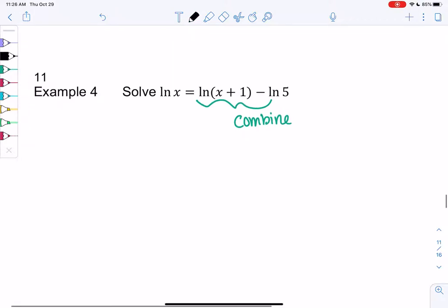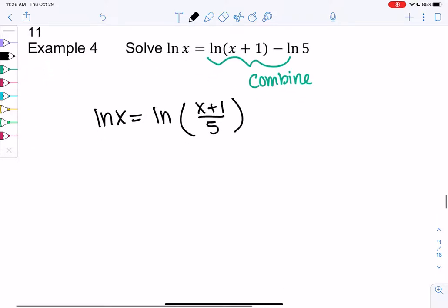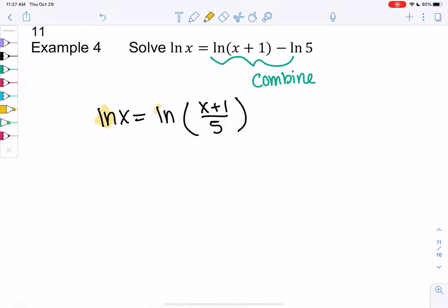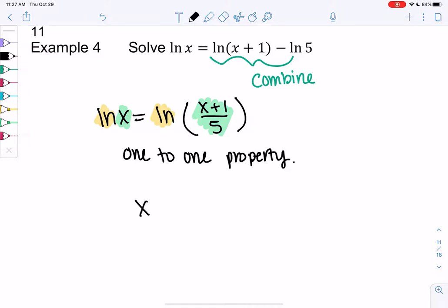So we have ln of x, we're going to leave the left side alone. On the right side, we'll use the property since it's subtraction. It becomes ln of x plus 1 divided by 5 when I combine them. And now we can use that 1-to-1 property because I have a single ln on both sides. The 1-to-1 property tells me the inner functions equal each other.